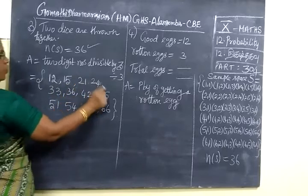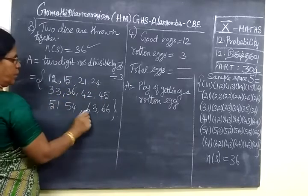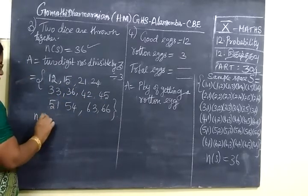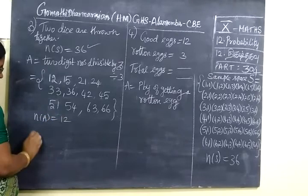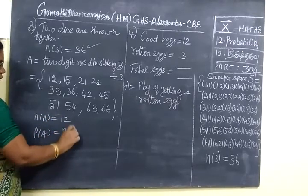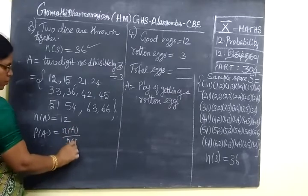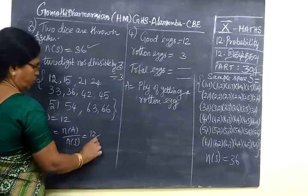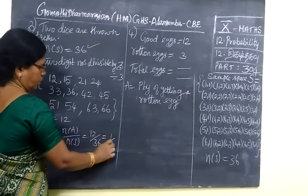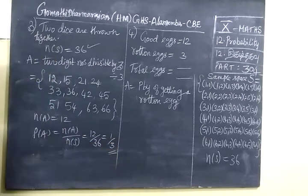Now counting 1, 2, 3, 4, 5, 6, 7, 8, 9, 10, 11, 12. So N of A equal to 12. So probability of A equal to 12 by 36, which is equal to 1 by 3. It is very simple.